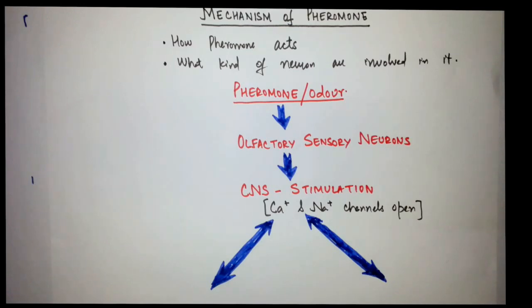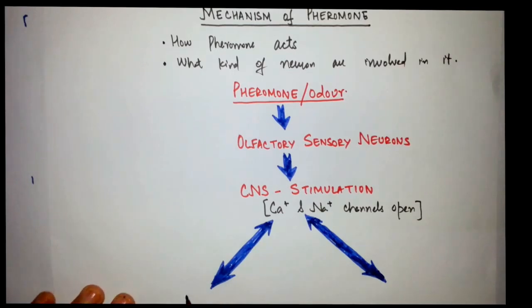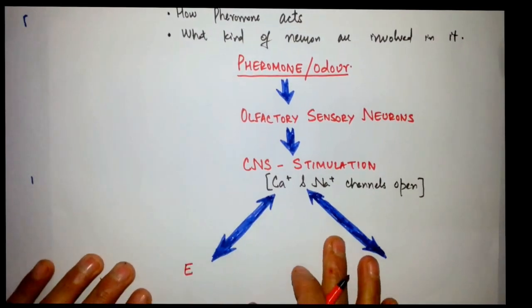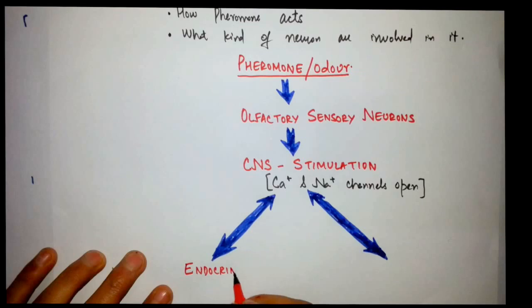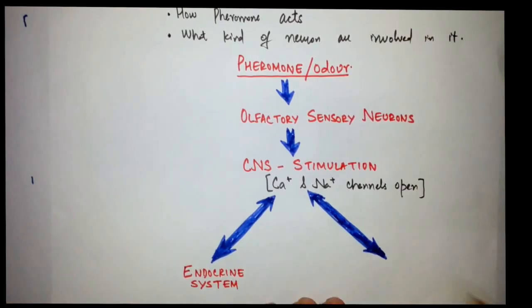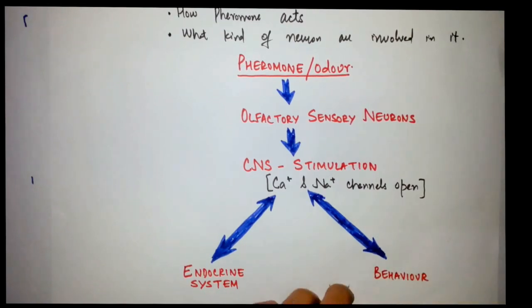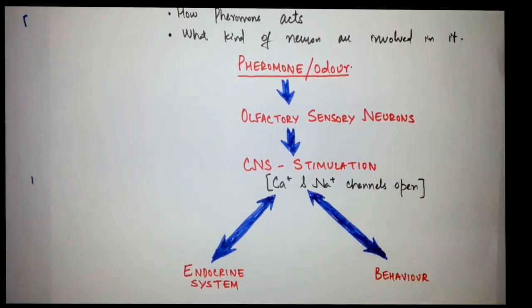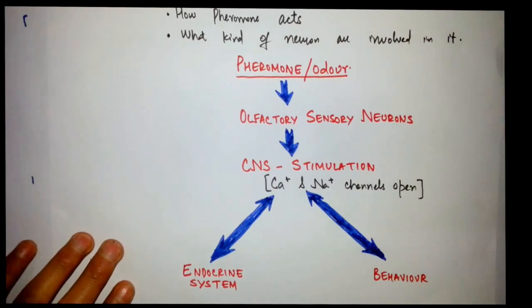I just made two arrows there, so there will be two pathways. This pathway will involve the endocrine system, and through this pathway it will involve the behavior of the animal. These are the two main points which will be under consideration when we talk about the mechanism of pheromones.